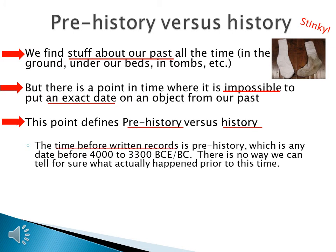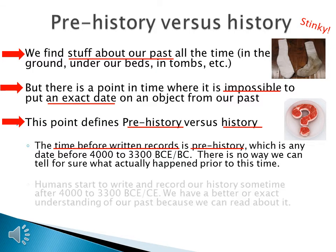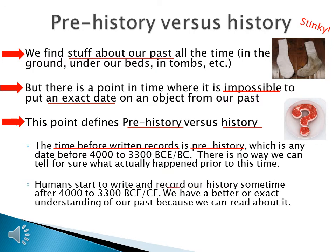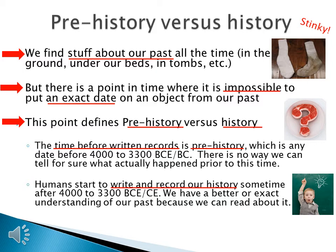The time before written records is prehistory, which is any date before 4000 to 3300 BCE. There's no way to tell for sure what exactly happened prior to this time because no one wrote anything down. Humans start to write and record history sometime after 4000 to 3300 BCE, giving us a better or even exact understanding of our past because we can read about it.